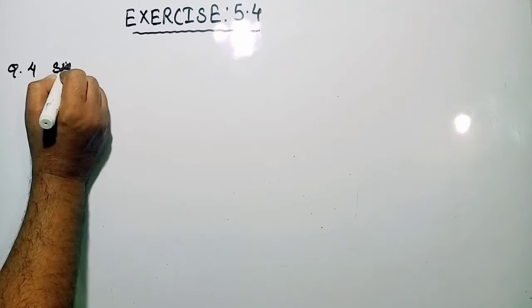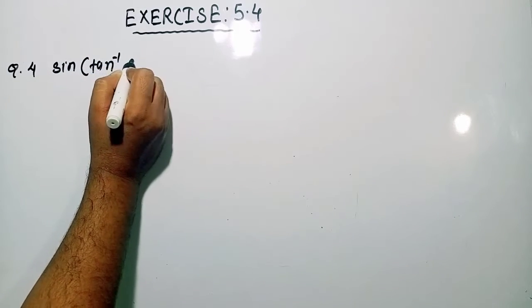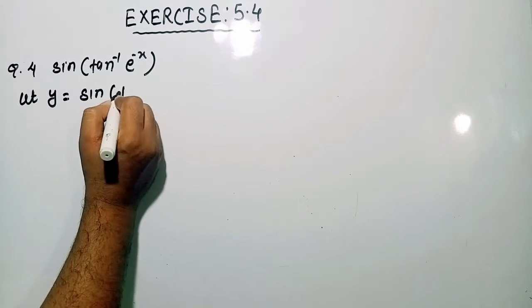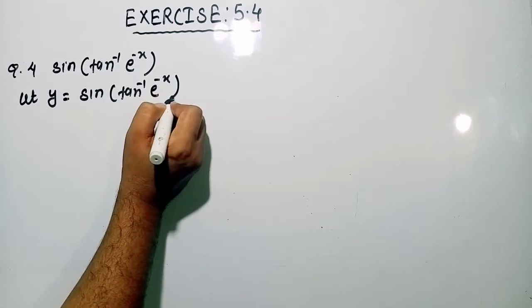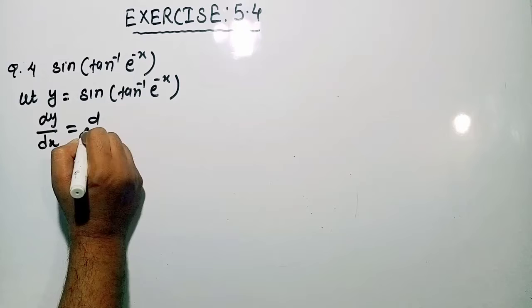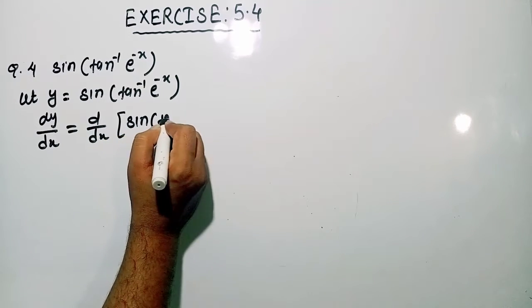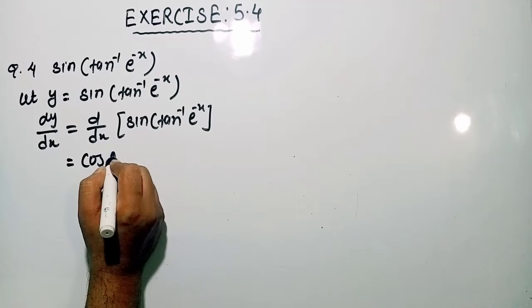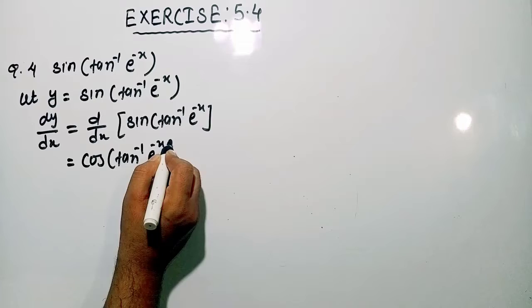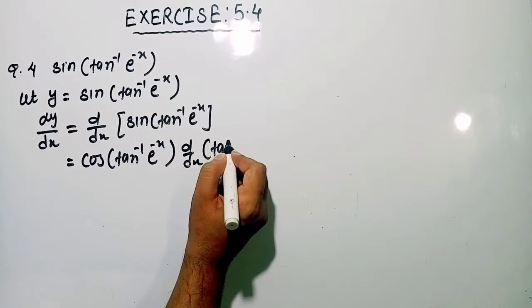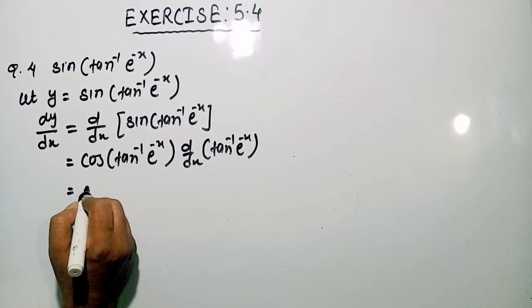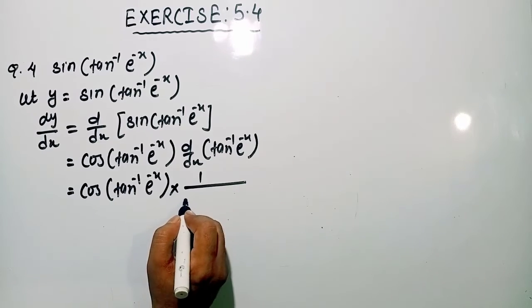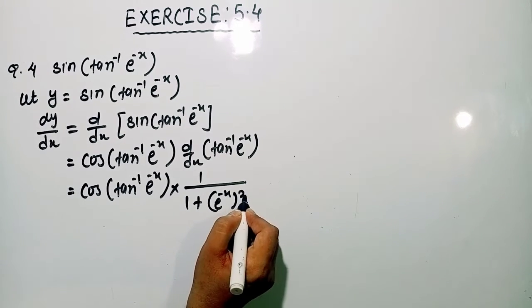Moving to the next question: differentiate sin of tan inverse e raised to the power minus x. So let us consider y is equal to sin of tan inverse e raised to the power minus x. Now differentiating with respect to x, so dy by dx. First, differentiation of sin will give cos of tan inverse e raised to the power minus x, then 1 upon 1 plus e raised to the power minus x whole square.